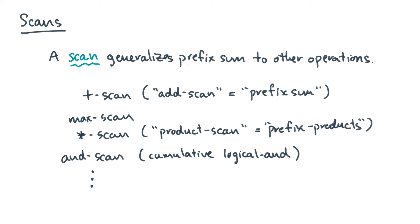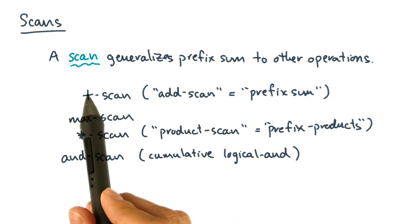Now the generalization of a prefix sum is sometimes called a scan operation. To use a scan in an algorithm, all you have to do is say that you're doing it and say what the operator is. For example, if we were doing a prefix sum, then we would say we were doing an add scan. That's a scan and the operator is a plus.